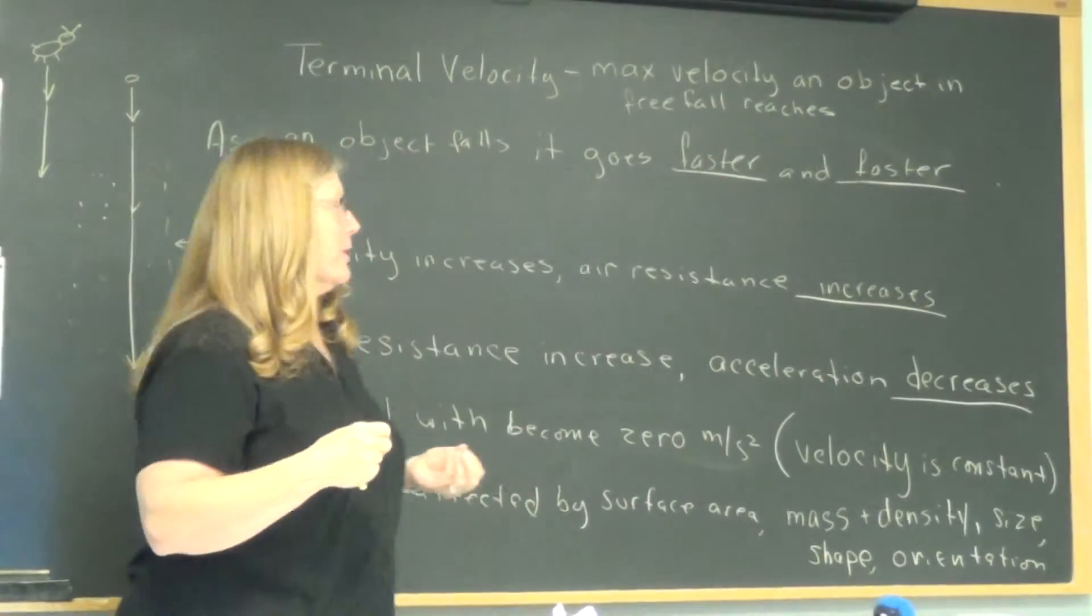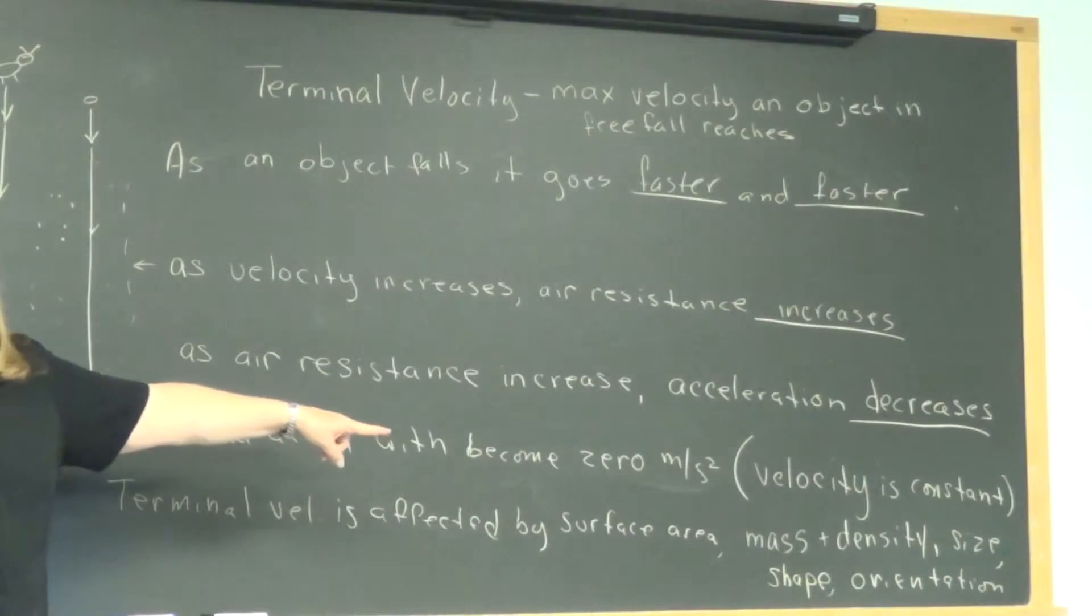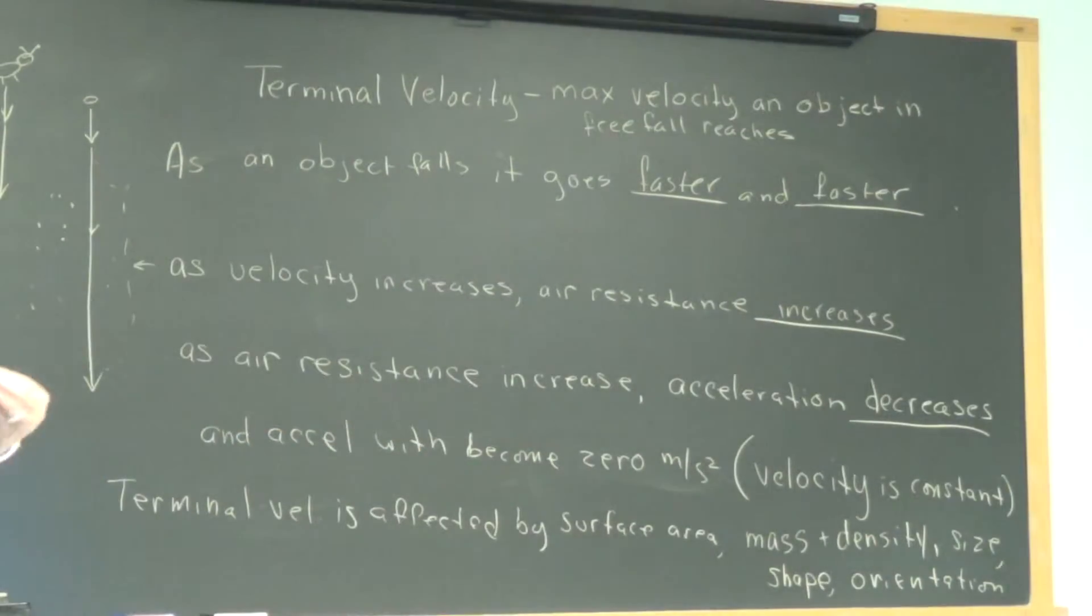It has quite a bit of surface area, and he will orient himself when he falls to his advantage. So, with all those clues, what do you think, Emily Martin? Will he reach terminal velocity early or late?